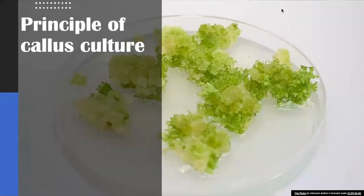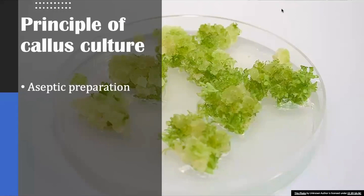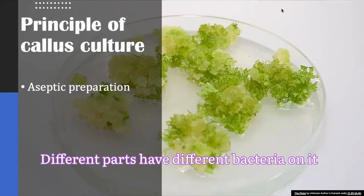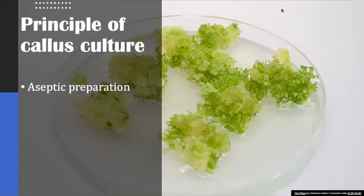What is the principle of callus culturing? For callus culturing, you need to ensure aseptic preparations. If you are choosing an explant — for example, a leaf — a leaf will have a different type of bacteria on its surface, and the root will have a different type of bacteria on its surface. We don't want that bacteria to grow into our culture medium; we just want to induce a callus. So we have to make sure that all these bacteria, funguses, and contaminants are removed, and for that we have to choose an aseptic preparation.